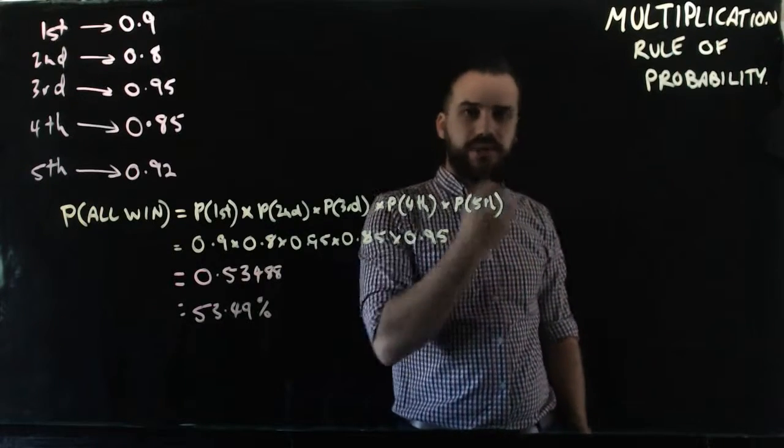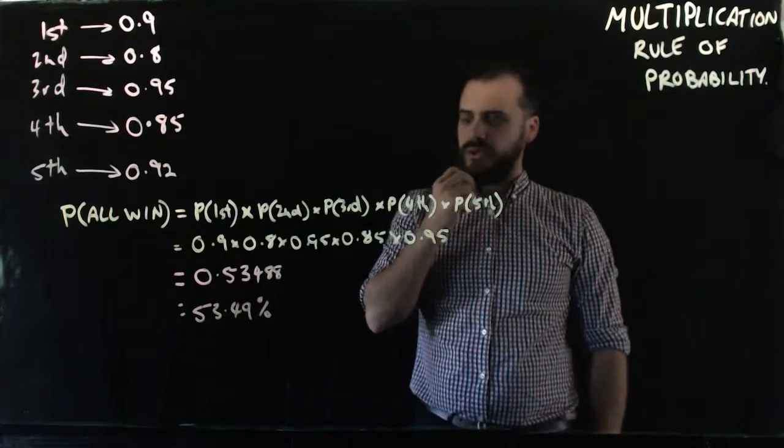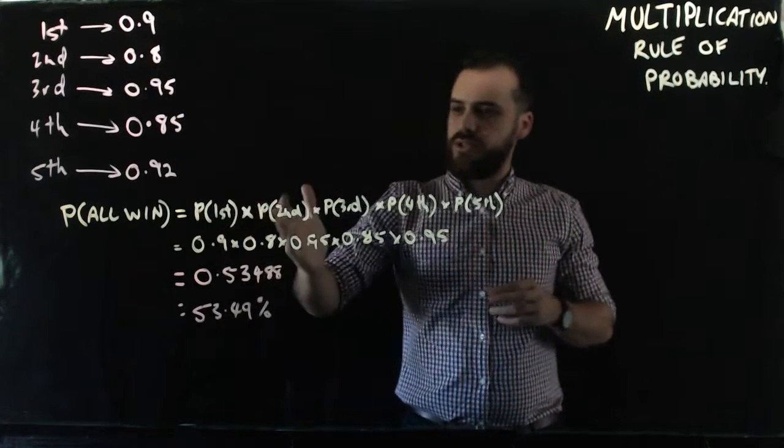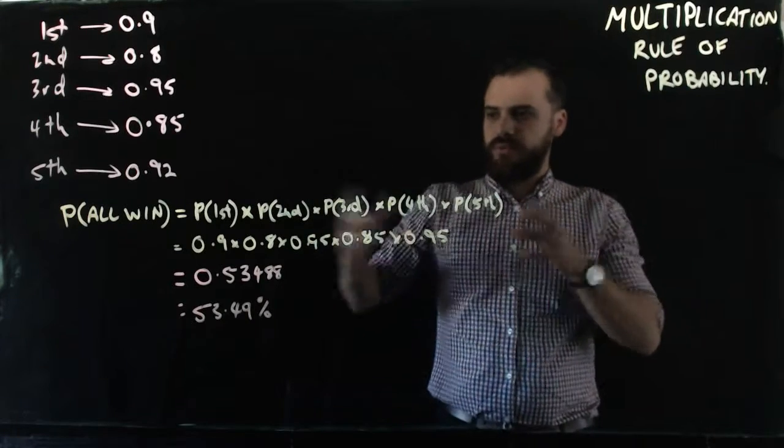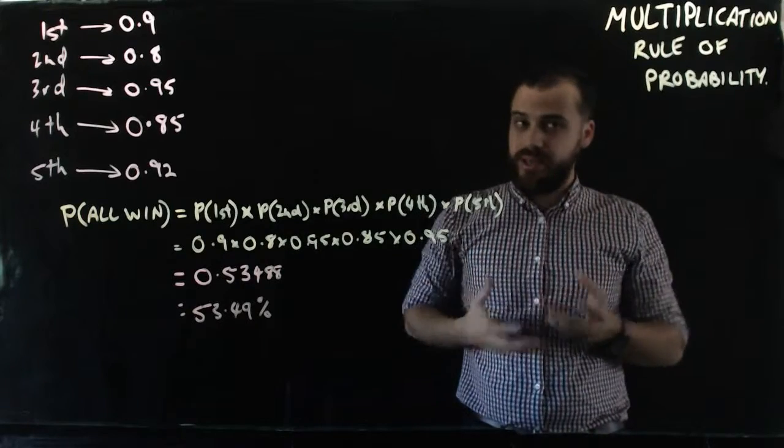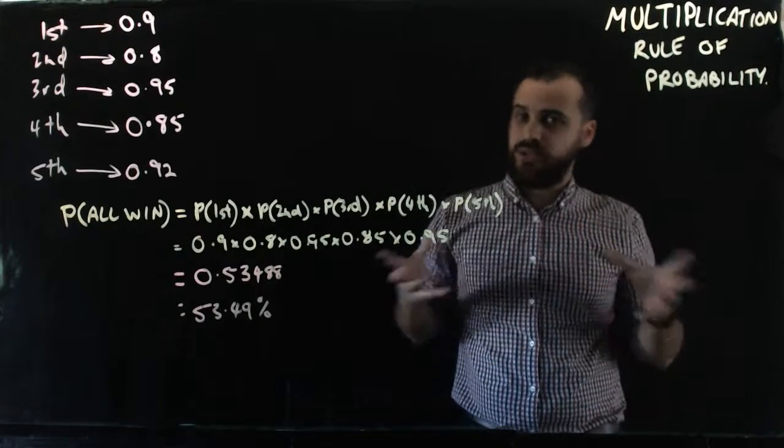It's an interesting thing about the multiplication rule of probability. This was an extreme example with five different events. We've multiplied the probability of each of those together. Any example you're going to get is probably going to be smaller than that, two or three events.